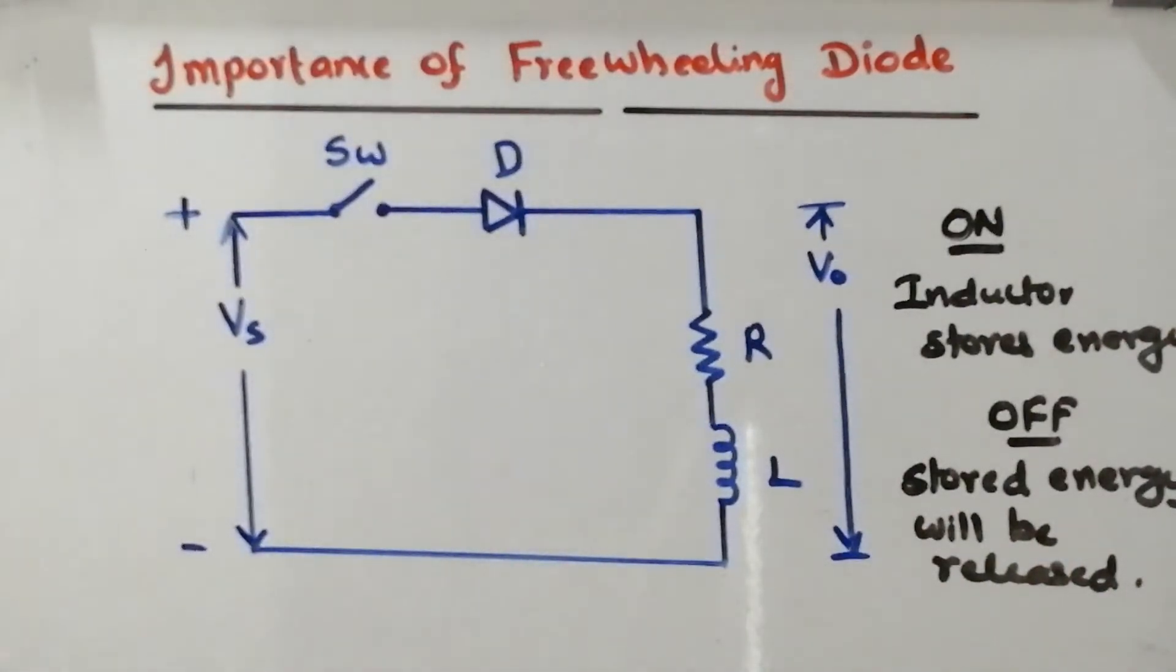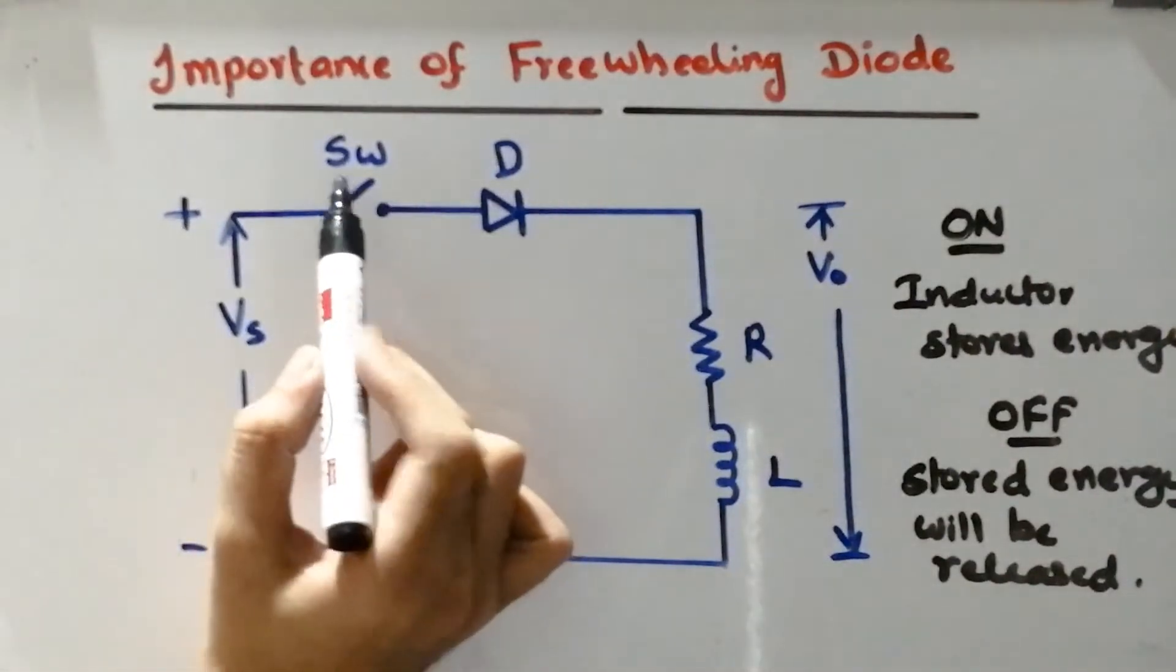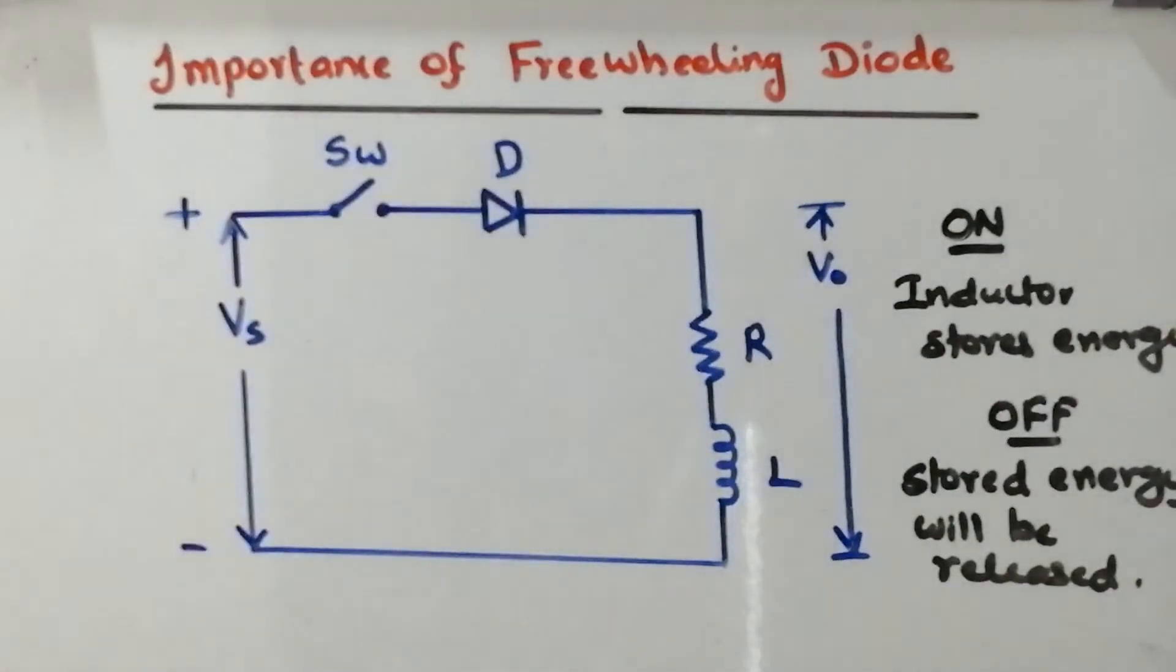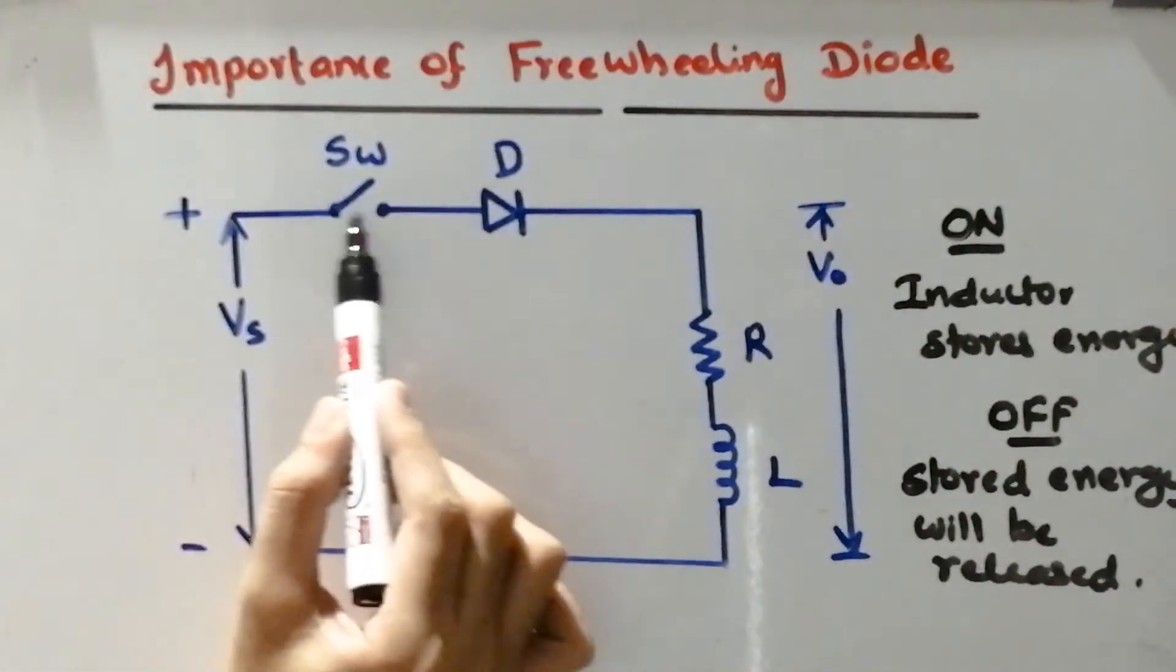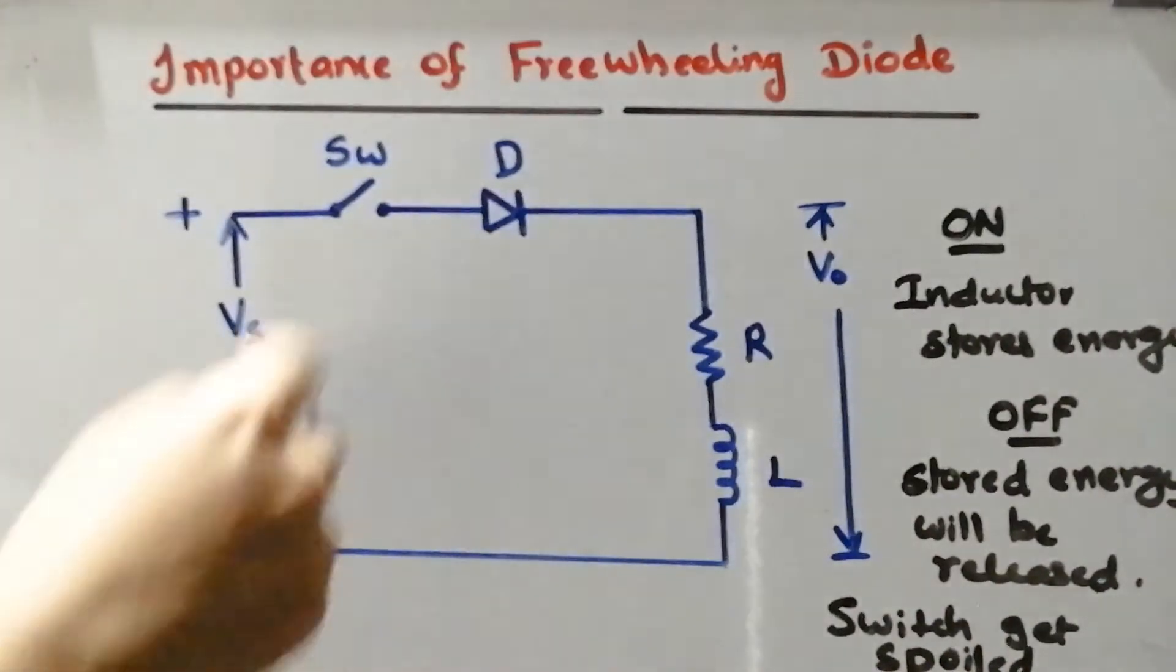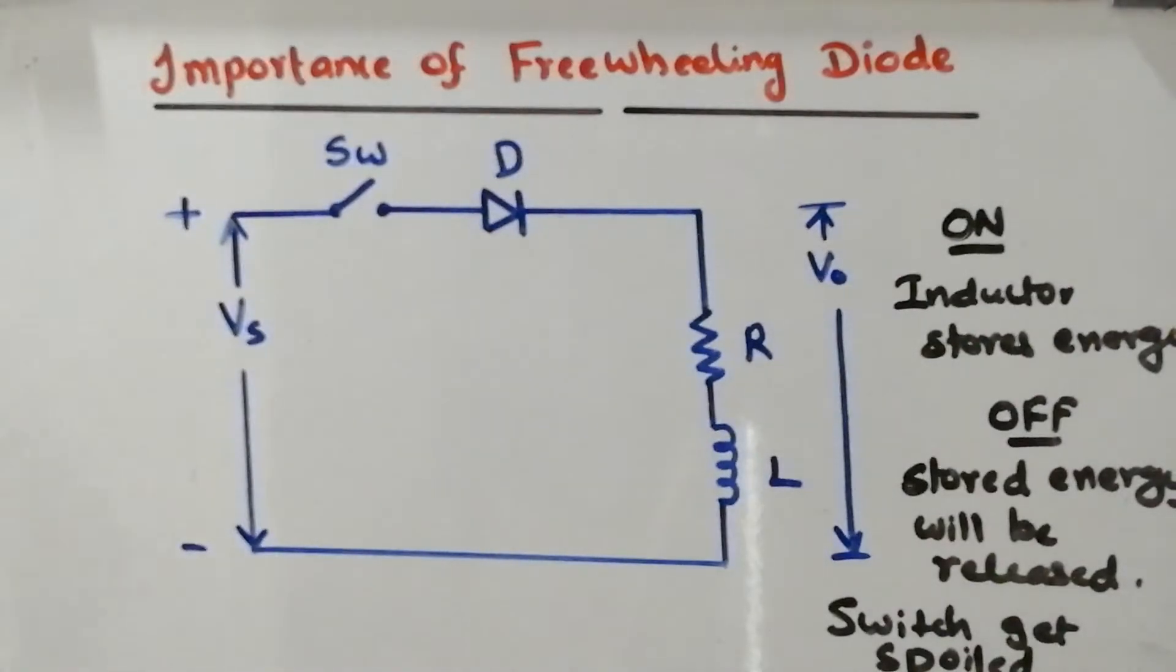Whenever energy is getting released, it will be reverting back to the circuit elements such as switch and diode, so sparking will take place across the switch. As a result, the switch will be spoiled. The power diode is also getting spoiled. So damaging of equipment will take place if this condition prevails. That's the main drawback.